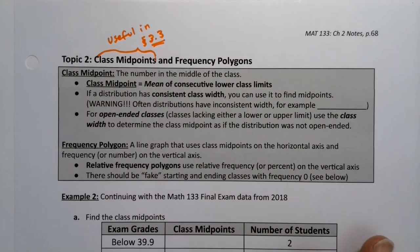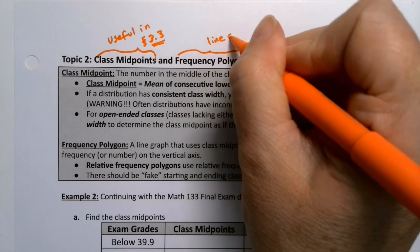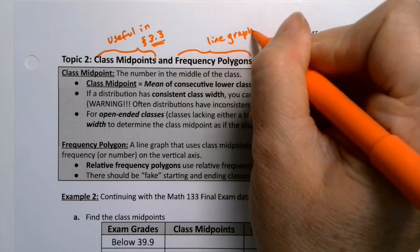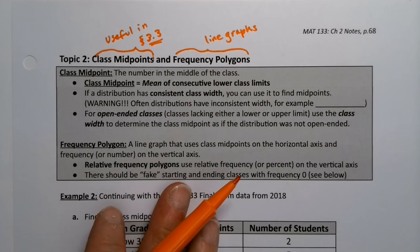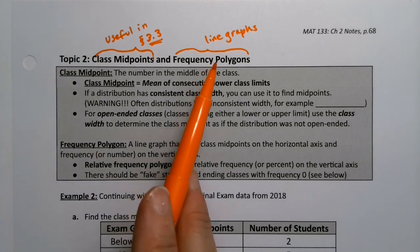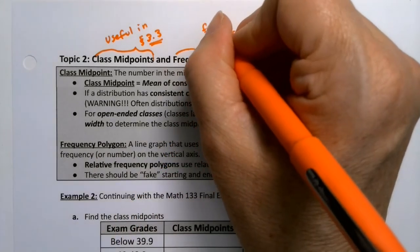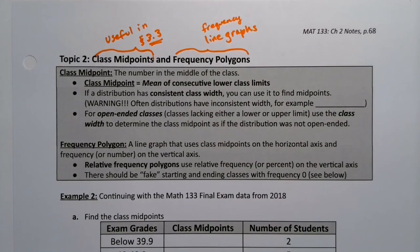And frequency polygons, it's a fancy way of saying basically line graphs. So if you've heard of line graphs from school, that's kind of what we're talking about. It's a little bit more fancy than that, it's a little bit more restricted. And of course, it's a frequency line graph, so you can think of it as a frequency line graph.